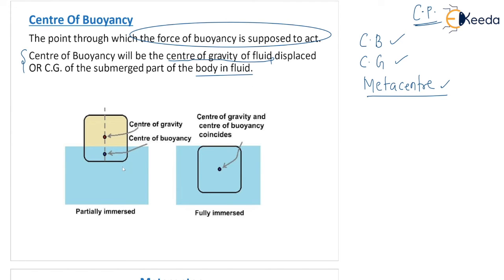How can we understand center of buoyancy? This rectangular body is in floating condition. The center of gravity is at the center for a regular body. Center of buoyancy is the center of the part which is inside water — the CG of the immersed part. You can see the blue color — you find out the center of that immersed part, that is the center of buoyancy. In this case, Cb will be below the center of gravity.